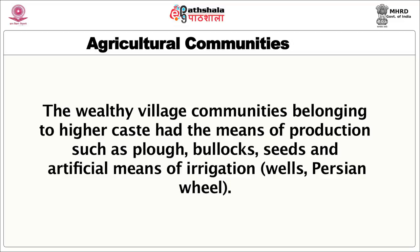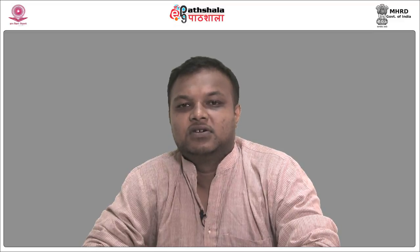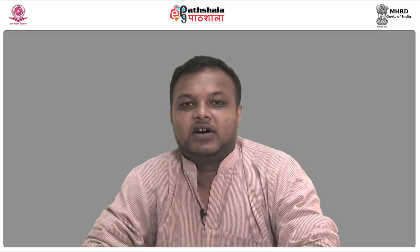The wealthy village communities belonging to higher castes had the means of production such as plough, bullocks, seeds, and artificial means of irrigation such as wells, Persian wheel, etc. Such communities of peasants were known as Gahurhala in Rajasthan.